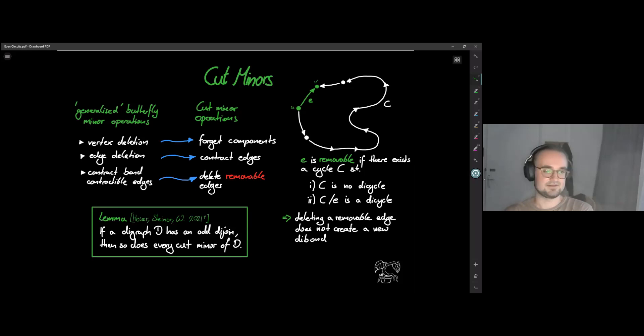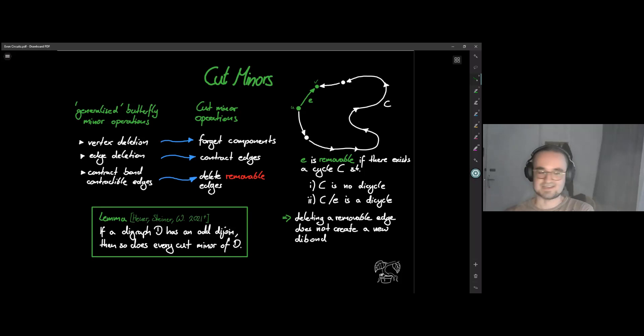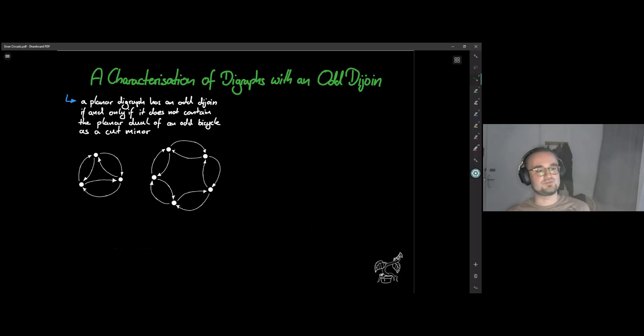Now we have all the ingredients and can talk about what happens in the dual: something we call cut minors. The three operations of our generalized butterfly minor — vertex deletion, edge deletion, and contracting bond-contractible edges — translate dually. Deleting an edge corresponds to contracting an edge in the planar dual. Dually, I call an edge removable if there exists a cycle C, which is not a directed cycle, but becomes a directed cycle if I contract E. If I remove a removable edge, I do not create new directed bonds. This allows structural claims about die bonds, and this is our dual operation to contracting bond-contractible edges. We can prove that if a digraph has an odd diejoin, then every cut minor of D also has an odd diejoin, because we don't introduce new die bonds.